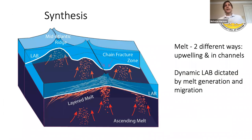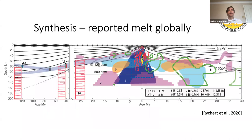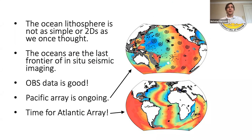Just to conclude: we think the cartoon of what's going on involves ascending melt from upwelling regions that coalesces at the base of the plate, and may channel and focus itself to the mid-ocean ridge. Because melt would necessarily weaken the asthenosphere, that may be what causes the rheological difference between the plate and the asthenosphere below. This is showing you images of what it looks like in different settings of what people have reported for melt — so we have a lot of variability in melt going forward.